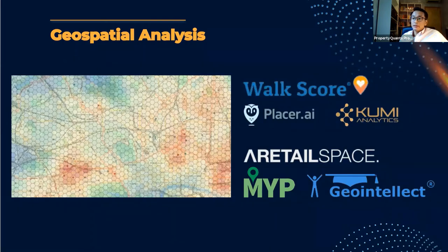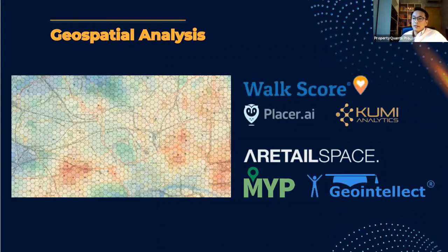Another key example is geospatial analysis. Location is a really important factor in real estate, and geospatial analysis is the branch of data science that allows us to study location factors. The screenshot on the left is a proprietary example of an analysis that Property Quants produces — a heat map that has gathered all the school information in London, UK. Areas marked in red have a higher location score for schools, based on proximity and quality of schools based on test scores.